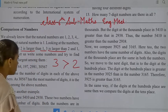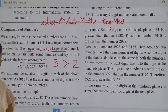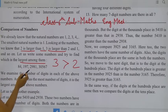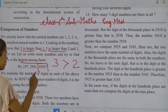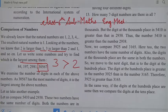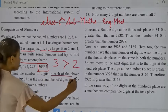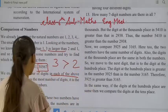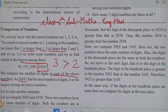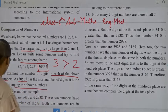Let us write some numbers and try to find which is the largest among them. You can see here: 84, 197, 2,987, and 30,567. Which one is the greater number? 30,567 is the greatest number. We examine the number of digits in each of the above numbers — 30,567 has the most number of digits. It is the largest among the above numbers.